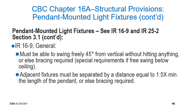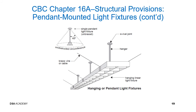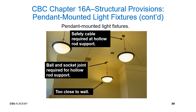The pendant-mounted light fixture must also be able to swing freely 45 degrees from vertical without hitting anything, or else bracing is required. We will later talk about spatial requirements if it free-swings below the ceiling. Adjacent fixtures must be separated by a distance equal to a minimum of 1.5 times the length of the pendant, or else bracing is required. This picture shows the 360-degree and 45-degree angle where the pendant-mounted light fixture can freely swing. This photo shows conditions of a hollow rod supported pendant light fixture — a safety cable and ball-and-socket joint are required to allow the hollow rod support to freely swing.